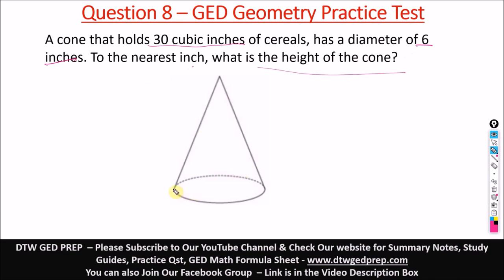It told us that the diameter is 6 inches. The diameter is a line that crosses the center of the circle, touches two points of the circle and passes through the center. So this is the diameter. If the diameter is 6, then it means the radius, which is half of the diameter from here to here is 3. From here to here is 3. So the radius is equal to 3.